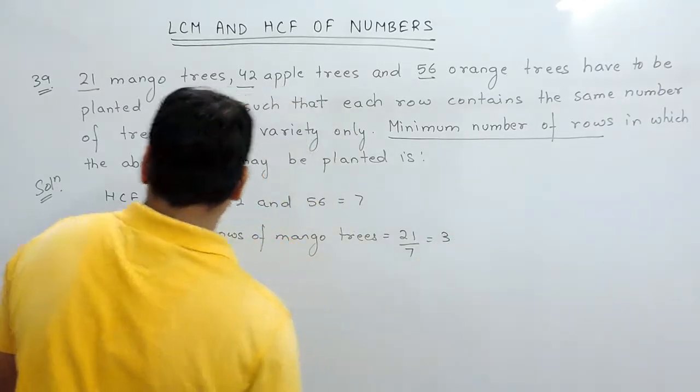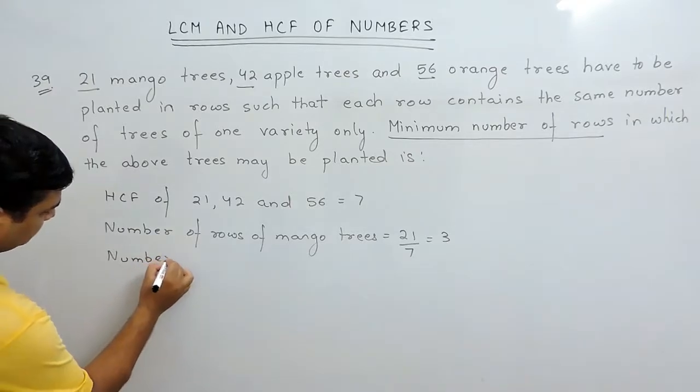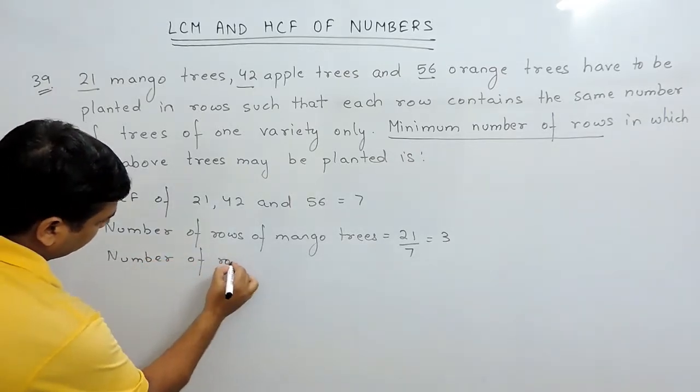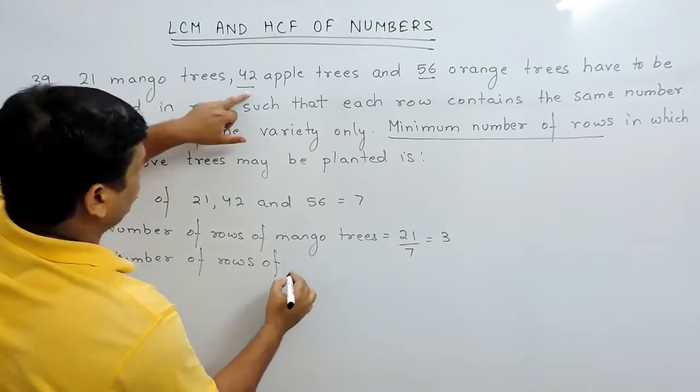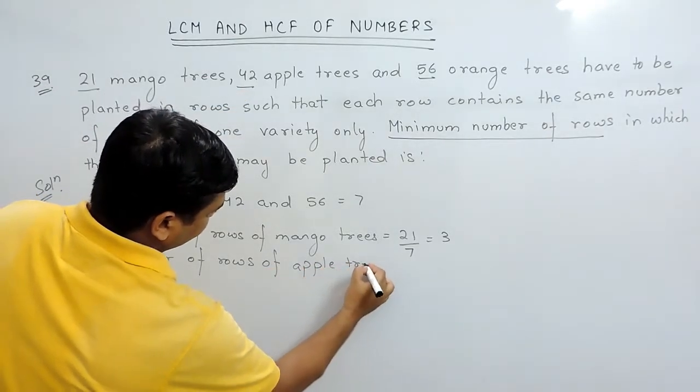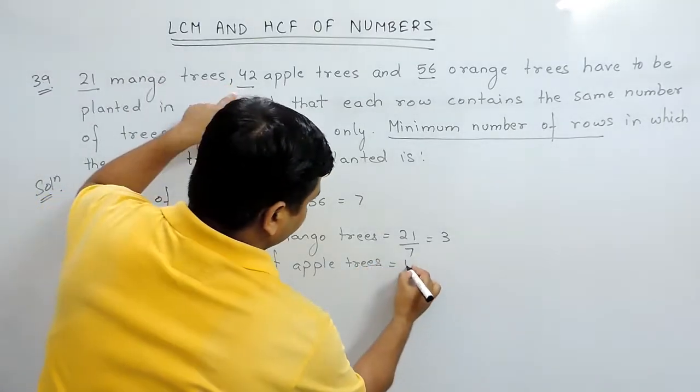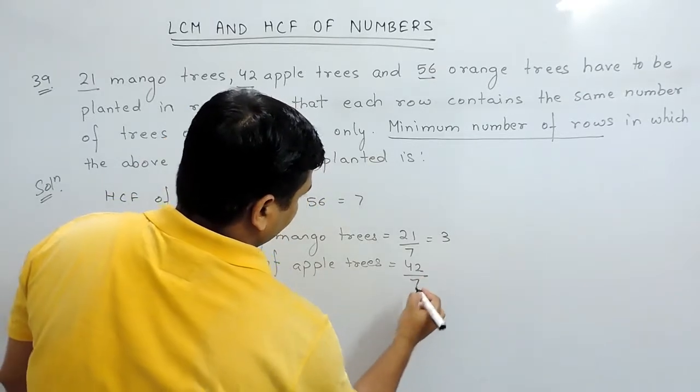And the number of rows of apple trees will be the total number of apple trees, that is 42 divided by 7, which is 6.